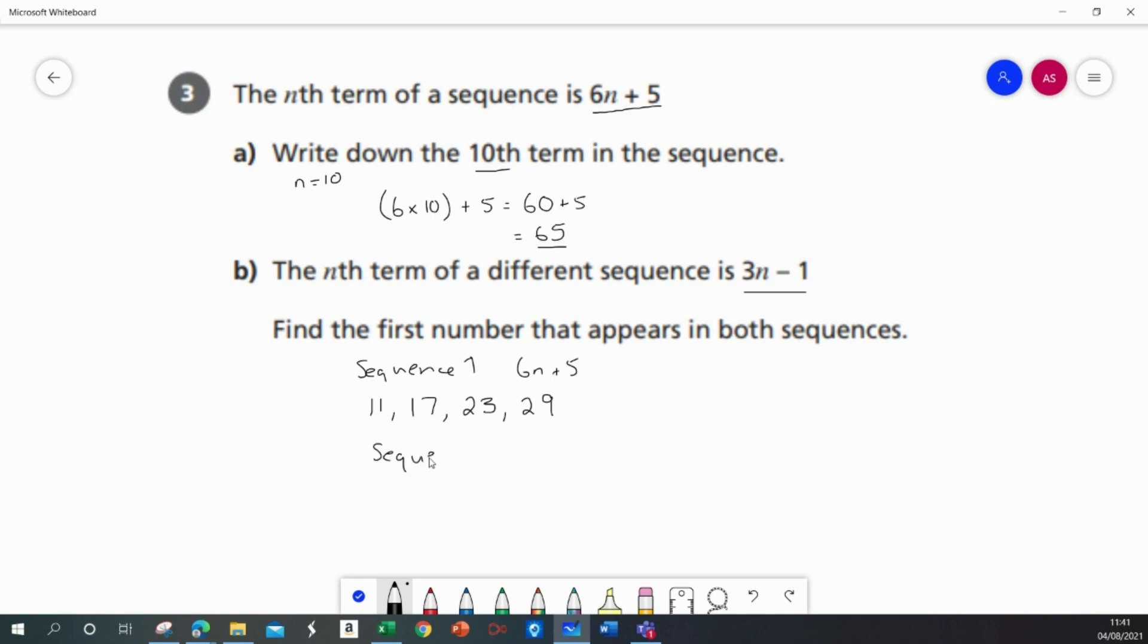Sequence 2, which is 3n minus 1, I'm going to do the same thing. Substituting the first n equals 1, 3 times 1 is 3, minus 1 is 2.